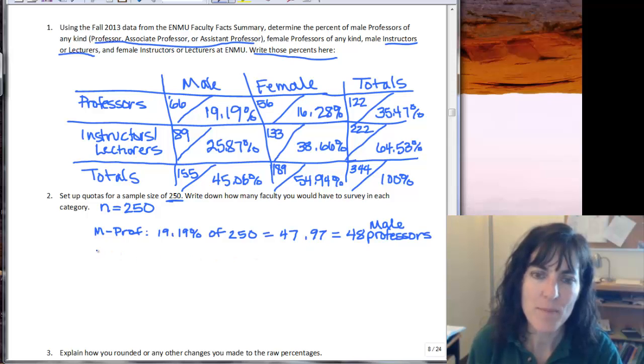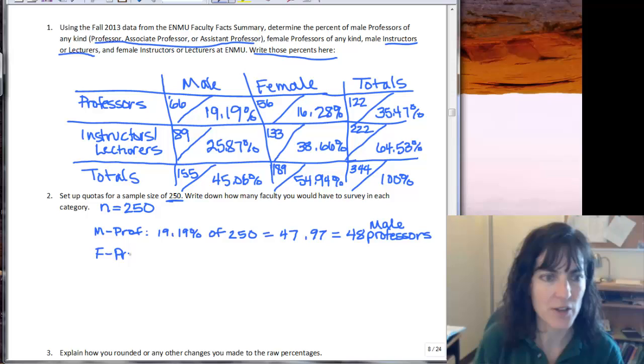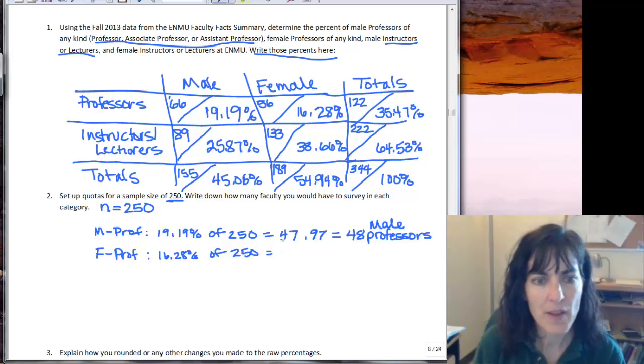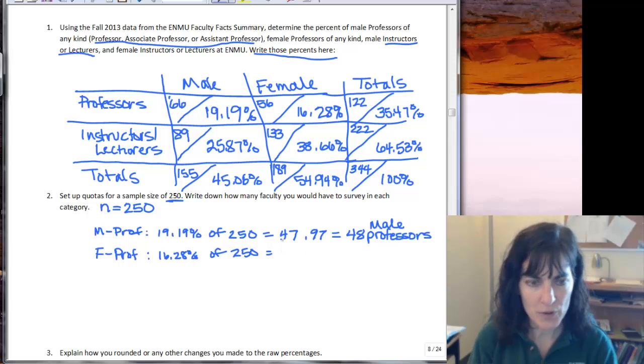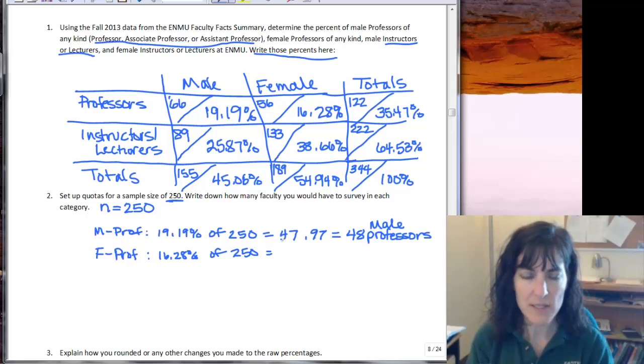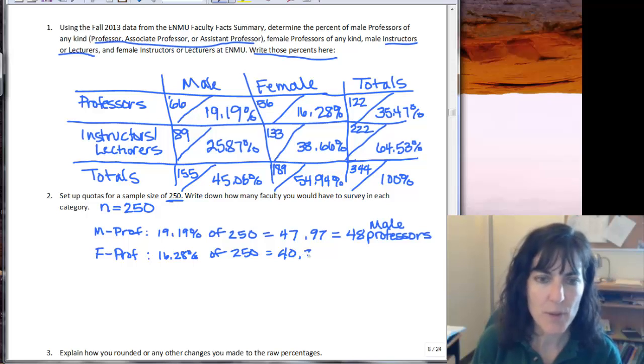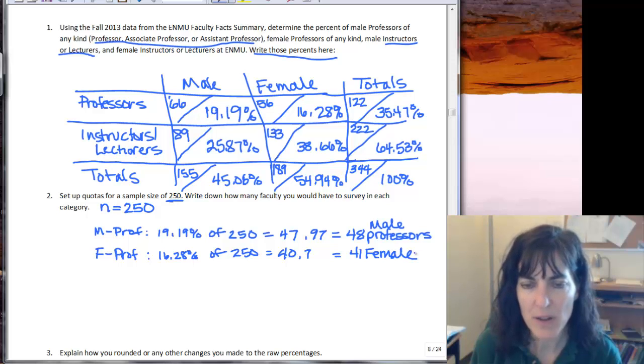And they do have to be male for this criteria. Then we want female professors, and so female professors we have 16.28% of the 250, so we're going to multiply 0.1628 times the 250 and we get 40.7. So we're going to talk to 41 female professors.